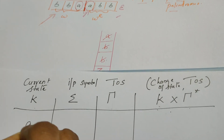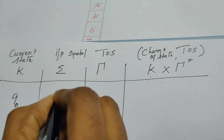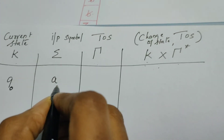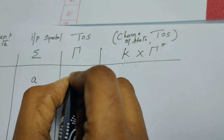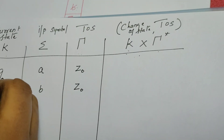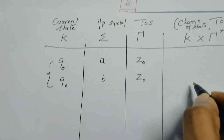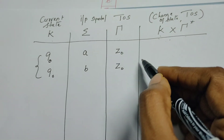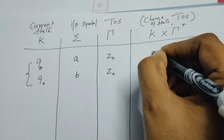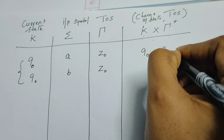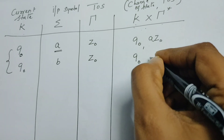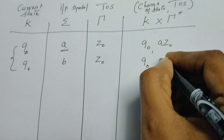The transition function has columns: k is the current state, sigma is the input symbol on the tape, gamma is what is available at the top of the stack, and the last column describes how the PDA must react — the change of state and pushing or popping the stack. Initially, the current state is q₀. The first character read may be A or B; the stack top is empty containing only Z₀. When it reads A, stay in q₀ and push A above Z₀; when it reads B, stay in q₀ and push B above Z₀.